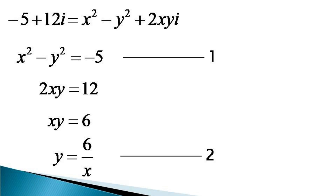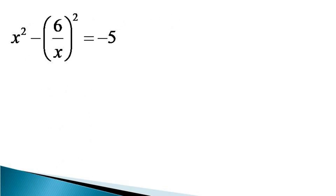Now we have two unknowns, x and y, and two equations, so we evaluate the values of x and y to get our solution. Considering the first equation and putting the value of y from the second equation, we get x squared minus (6/x) squared is equal to minus 5, which becomes x squared minus 36 divided by x squared is equal to minus 5.